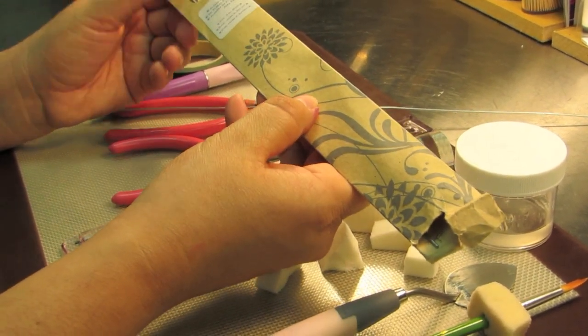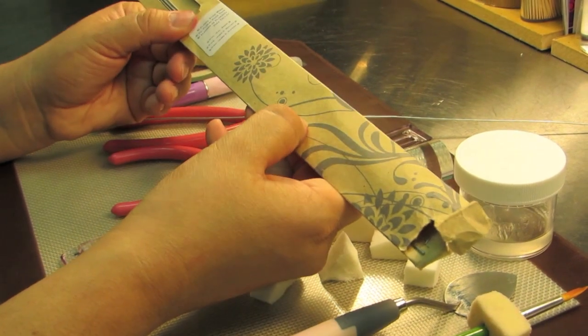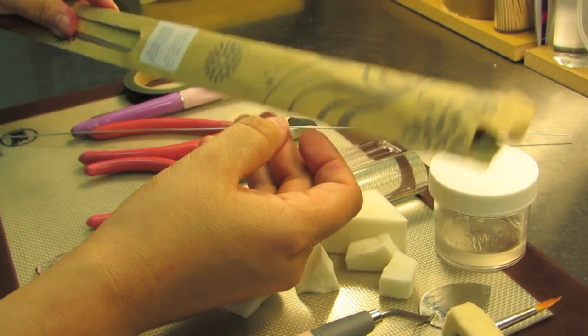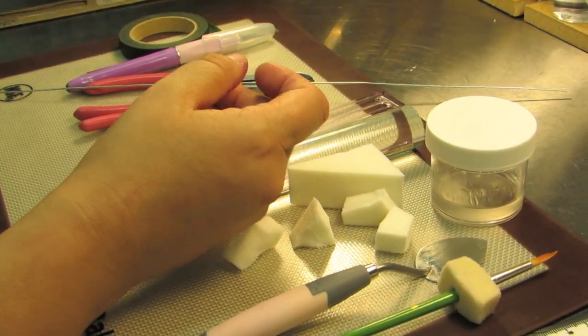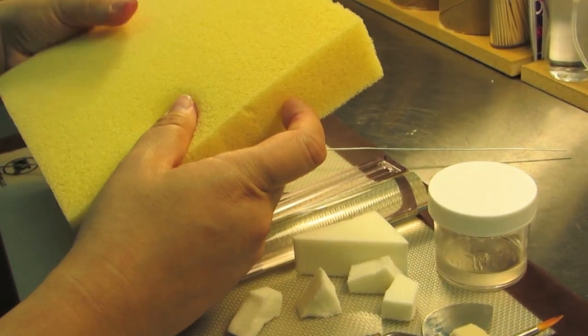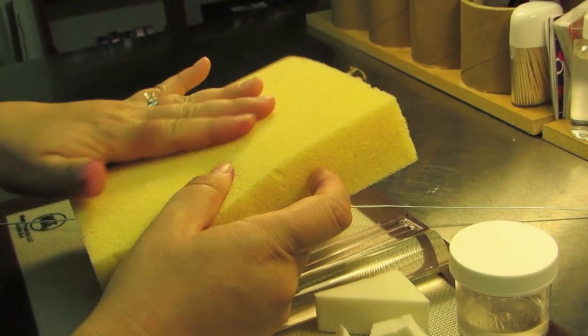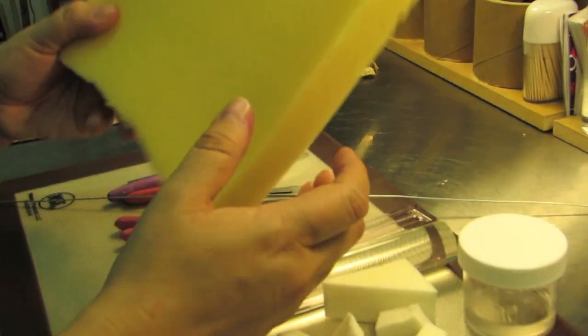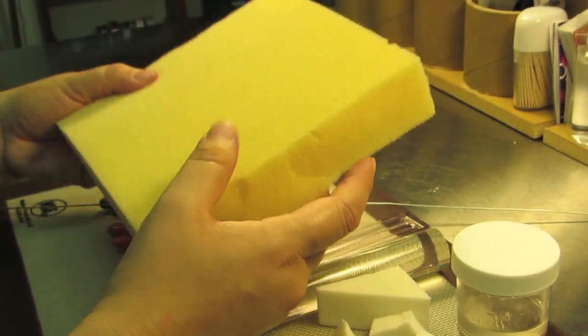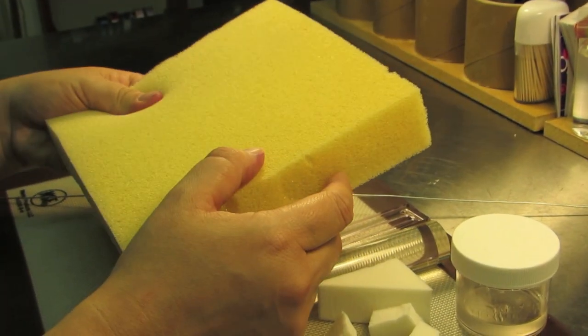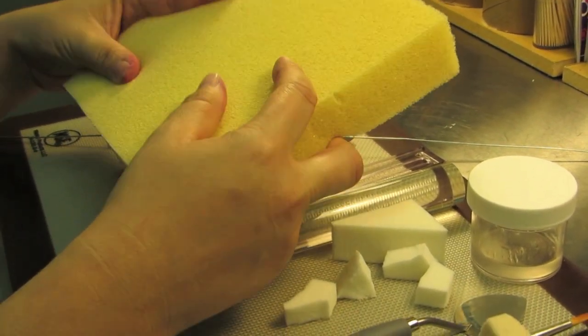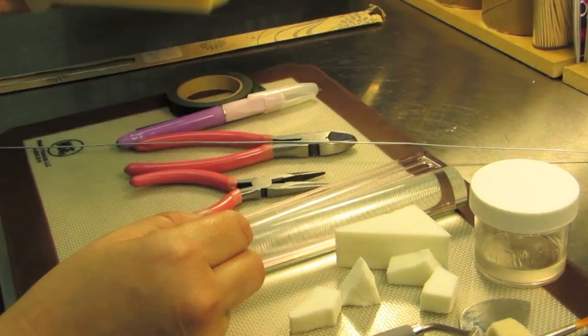Remember when it comes to wire, the smaller the gauge, the stronger the wire. So 18 gauge or smaller number. We also use a lot of foam pads in the studio and I use these to dry my loops. If you don't have foam pads, then you can just use wax paper or parchment paper, but they will take longer to dry. Let's get started.